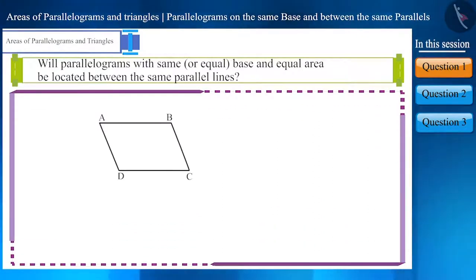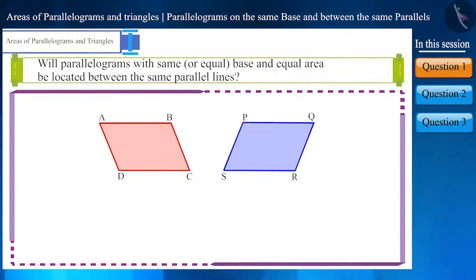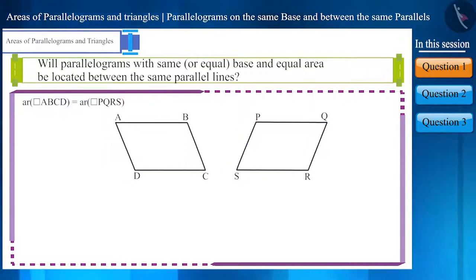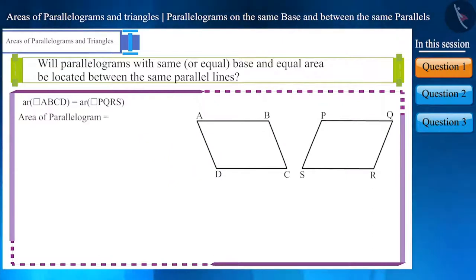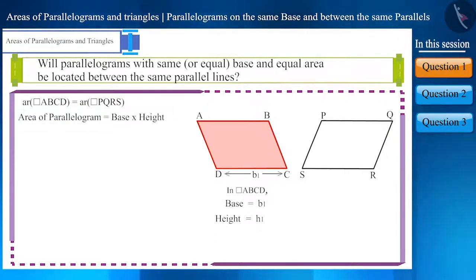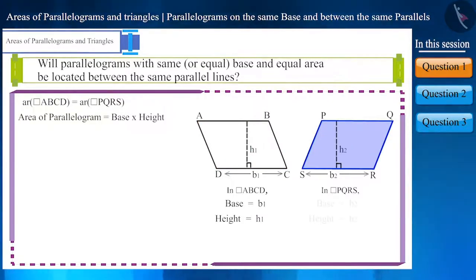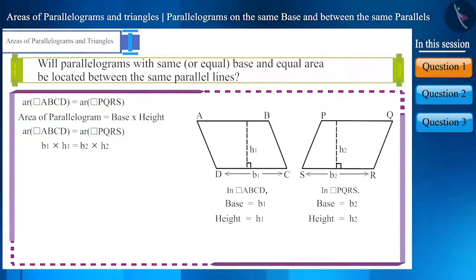Suppose we are given two parallelograms ABCD and PQRS of equal bases which are equal in area. The formula for the area of a parallelogram is base multiplied by height. Suppose the base and height of parallelogram ABCD are B1 and H1 respectively, and the base and height of parallelogram PQRS are B2 and H2 respectively. Since the bases of these two quadrilaterals are equal, we write B1 equal to B2.